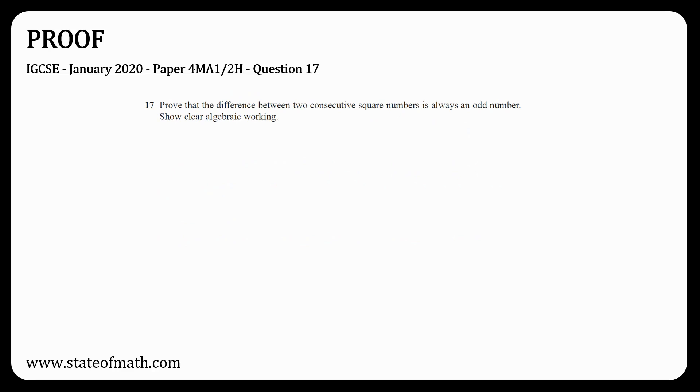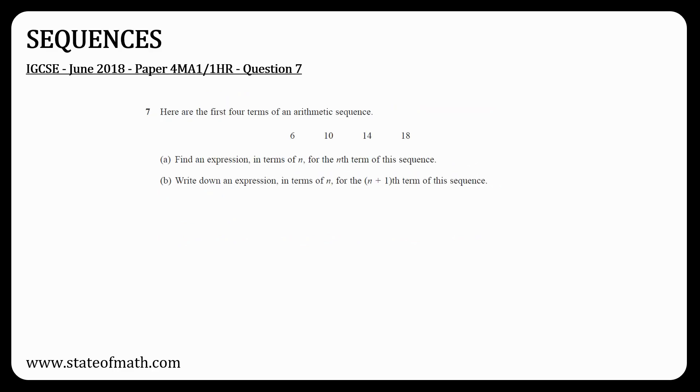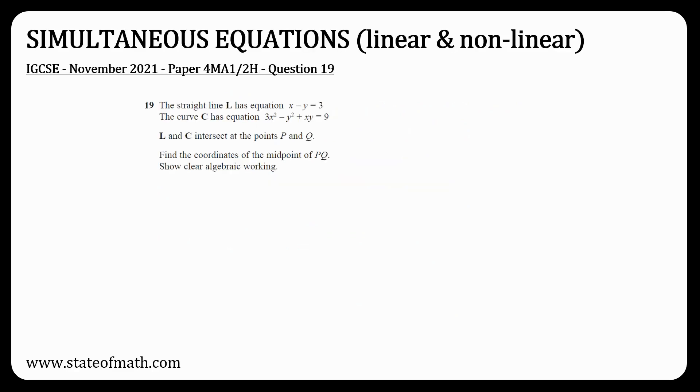The last question of paper 1 was on the sum of arithmetic sequences. I have seen cases before where a second question appeared but a simpler one involving the nth term like this one. Simultaneous equations involving two linear equations appeared on paper 1, but simultaneous equations with one linear and one nonlinear did not. Note how this question combines simultaneous equations with the formula of the midpoint from the straight lines chapter that I mentioned before.